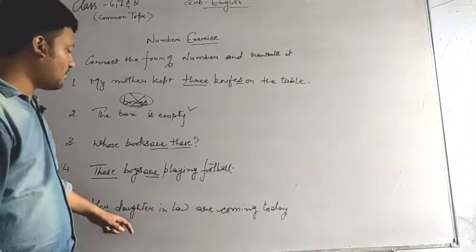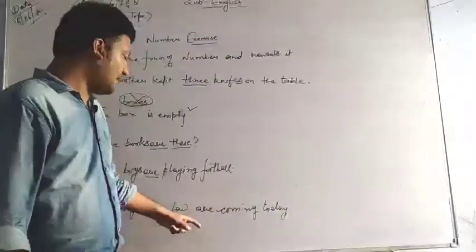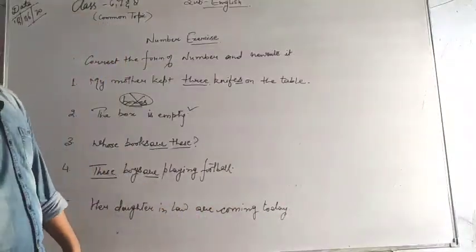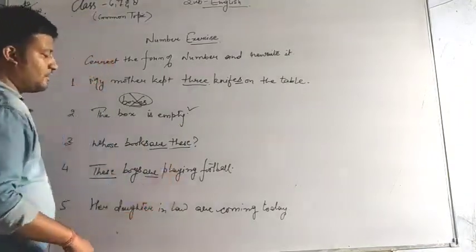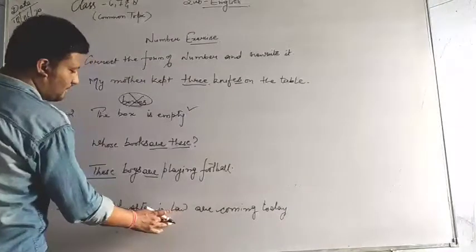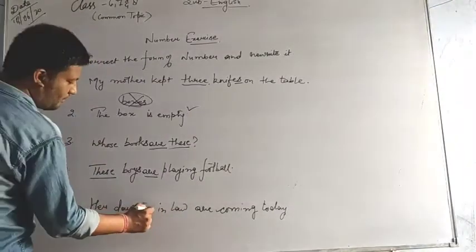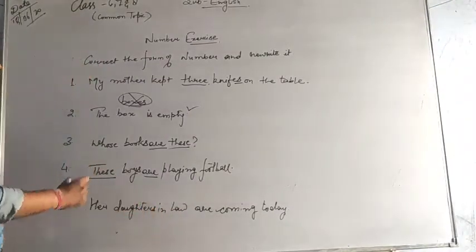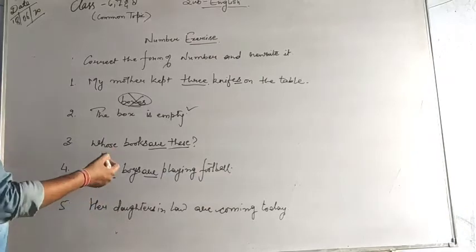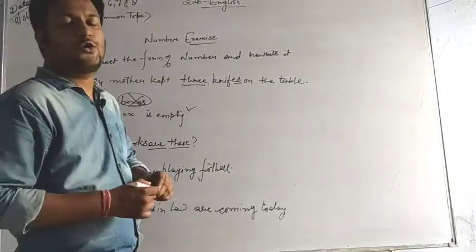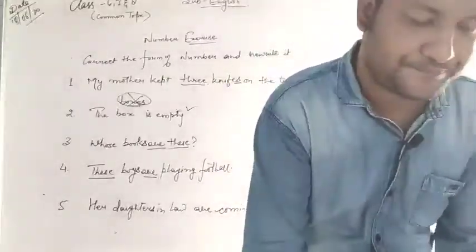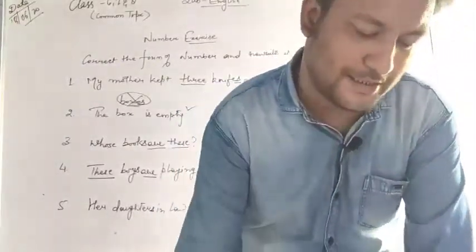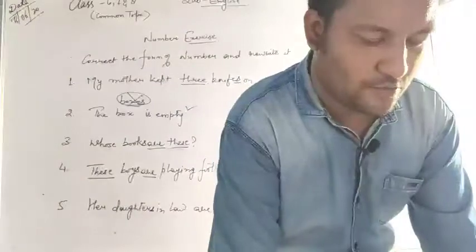Now her daughter-in-law are coming today. Again 'are' is given. 'Are' I use for plural ones. Here daughter-in-law - now I have told you this also, the main word I put S with it and it becomes plural. So her daughters-in-law are coming today. Okay, so this is the correct sentences what I have told you.